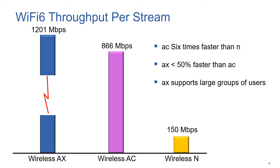If you look at the difference in performance, with Wireless N we had 150 megabits per stream. When we went to Wi-Fi 5 or Wireless AC, we jumped to 866 megabits — so we improved the throughput by a factor of 6, a massive jump in performance. When we move from Wi-Fi 5 to Wi-Fi 6, we don't see such a dramatic improvement. We're only seeing an improvement of around 50%, because remember, Wi-Fi 6 is all about efficiency. What we hope to achieve is better overall performance for everybody — for example, in the football stadium or in the university auditorium — so the average throughput per user should be much, much higher than with previous implementations of Wi-Fi.